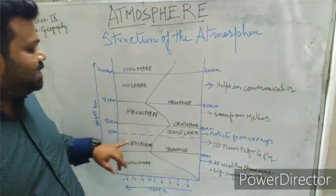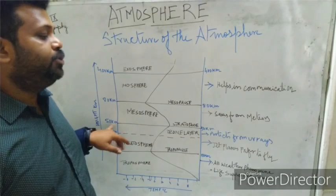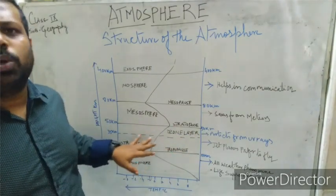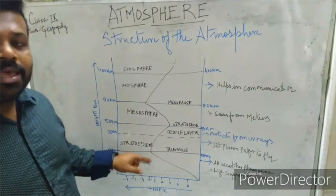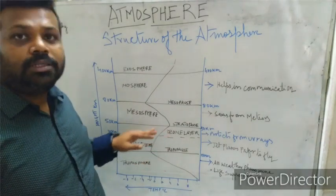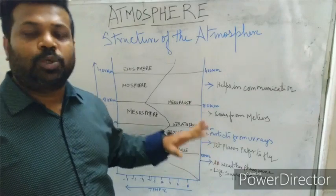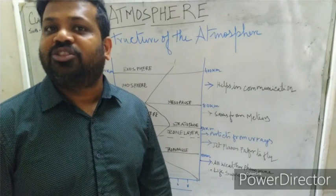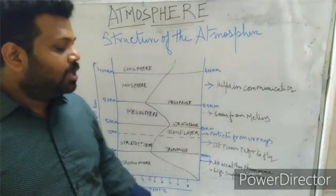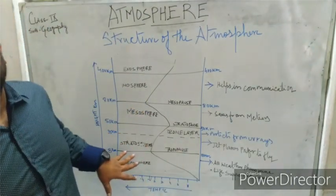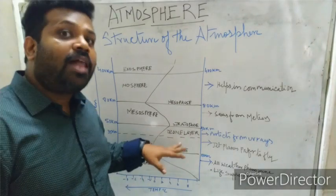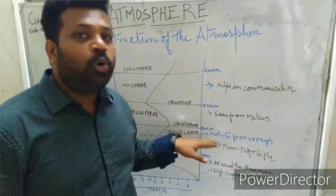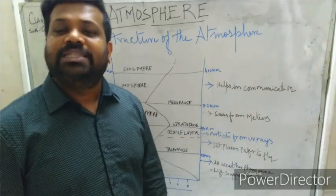The next layer is the stratosphere, which extends up to 50 km. There are no clouds in this layer because there is no water vapor or dust particles, so no cloud formation occurs. As a result, jet planes prefer to fly through this layer because of clear weather. A strong wind called the jet stream also blows in this layer.